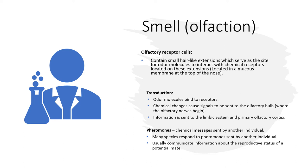Transduction occurs when chemical changes cause signals to be sent to the olfactory bulb. Interestingly, for all our senses, information first goes to the thalamus — the relay station of the brain — except for smell, which goes directly to the olfactory bulb. This is related to survival: any delay in processing smell, which provides information about potential dangers, could put us at risk. By bypassing the thalamus and going straight to the olfactory bulb, processing is quicker, increasing our chances of survival.